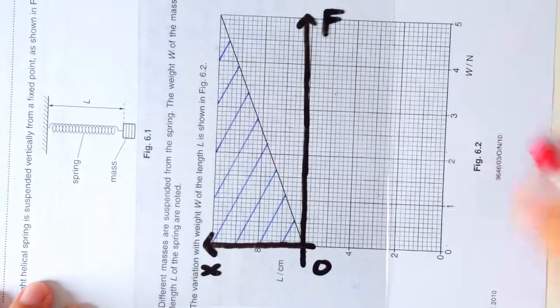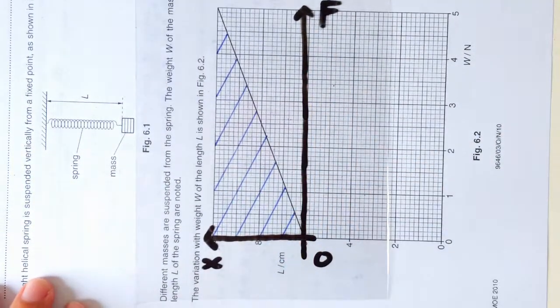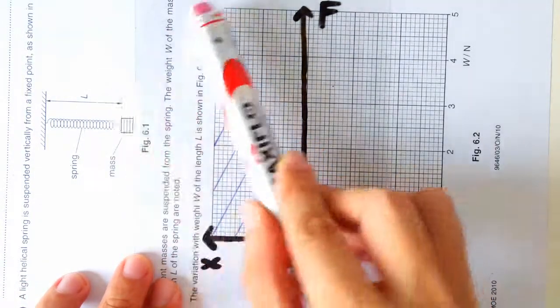Maybe it helps if I rotate the graph. So this is your fx graph and the elastic potential energy is the area under the fx graph.